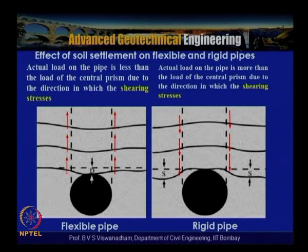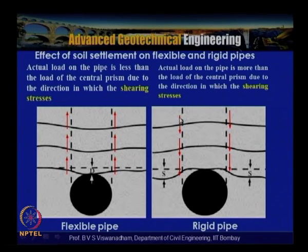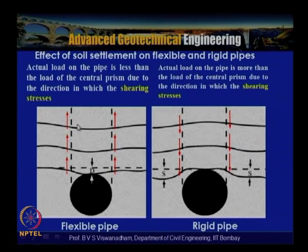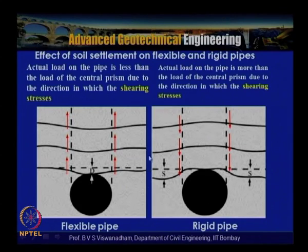The effect of soil settlement on flexible and rigid pipes is shown here. In the case of a flexible pipe, the pipe undergoes more settlement than the surrounding soil. In the case of a rigid pipe, the surrounding soil undergoes more settlement than the pipe. For flexible pipes, the shear stresses from the external prisms on the left and right resist pipe settlement, so the actual load on the pipe is less than the load on the central prism.